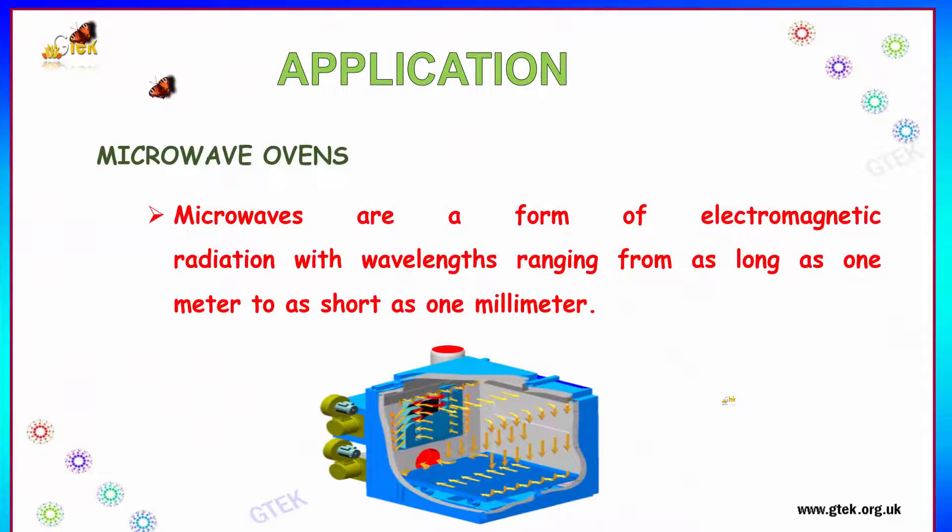Let's talk about the applications. One such example is microwave ovens. Microwaves are a form of electromagnetic radiation with wavelengths ranging from as long as 1 meter to as short as 1 millimeter.